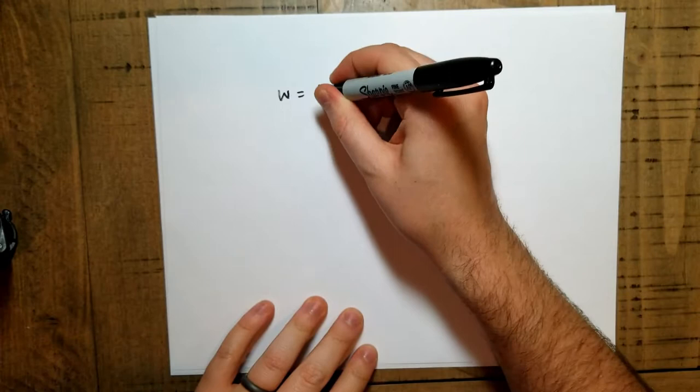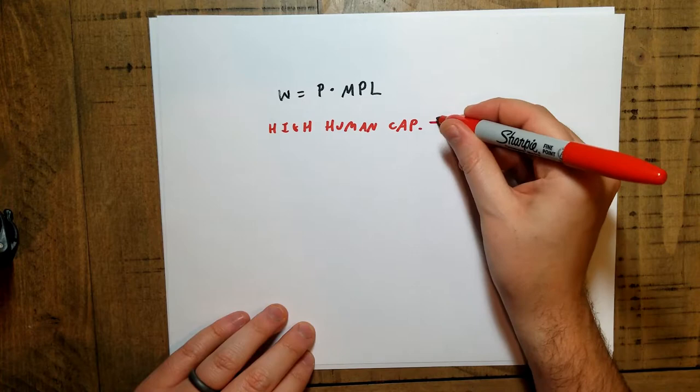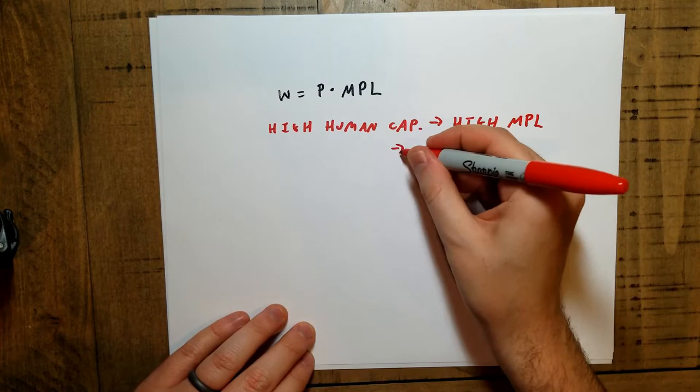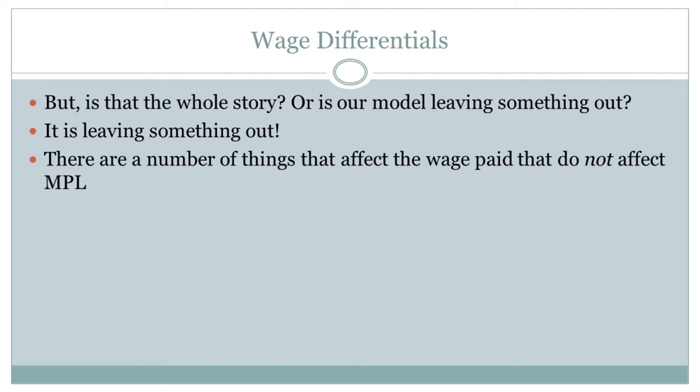That is one explanation for why different people get paid different amounts. Labor demand is based on setting the wage equal to the price times the marginal product of labor. Simply put, if you are a person with high amounts of human capital, your marginal product of labor is very high — you produce a lot for the employer. So according to the labor demand curve, people are willing to pay you more. If you're great at fixing cars, a car mechanic shop should pay you a high wage because you'll do a lot for them.